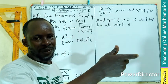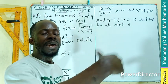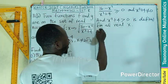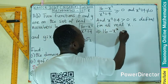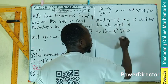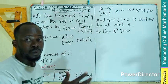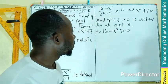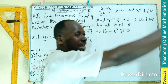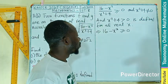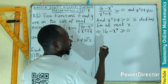We need the numerator to avoid negative values. This implies that 16 minus x squared should be greater than or equal to zero. It can be zero — if it is zero, the whole expression becomes zero, and the square root of zero is still a real defined number. We solve this to find values making the numerator in the range of zero and above.